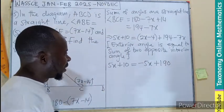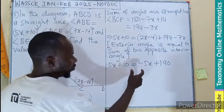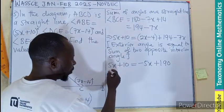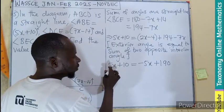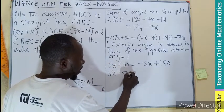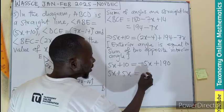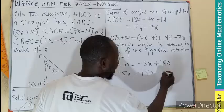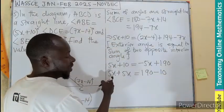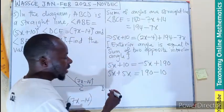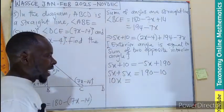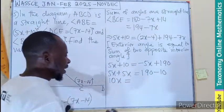What are we looking for in this case? We are going to bring the negative x here to become positive. So 5x plus 5x equals 190, positive becomes negative 10. So 5x plus another 5x will give you 10x. 190 minus 10 will be 180.